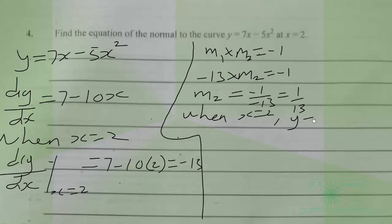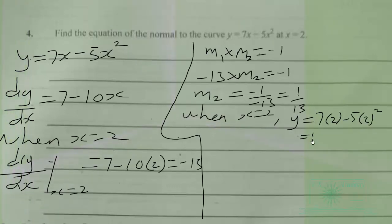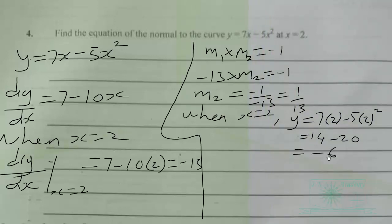y will be equal to 7 times 2 minus 5 times 2 squared, which gives us 14 minus 20, equal to negative 6. So the point is (2, negative 6). For the equation of the normal, we use gradient 1/13 and point (2, negative 6).